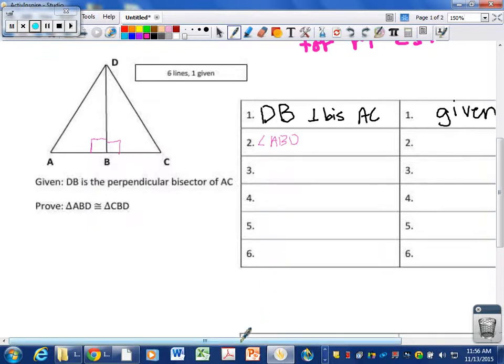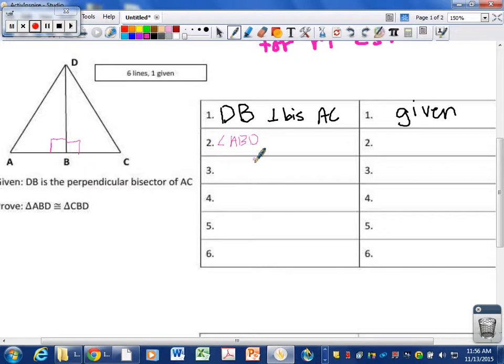So what we are supposed to say is that angle ABD and angle CBD are right angles. That is what the perpendicular definition tells us. So that's what we are allowed to write, is that these things are right angles. And the reason is by the definition of the perpendicular bisector. So right now we're using the perpendicular part of the perpendicular bisector, that they meet at 90 degree angles.